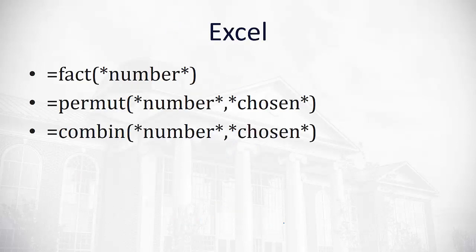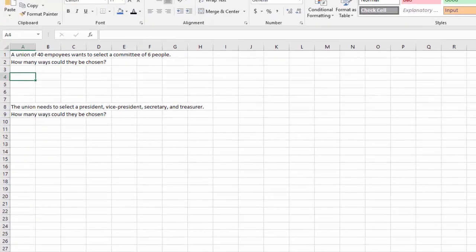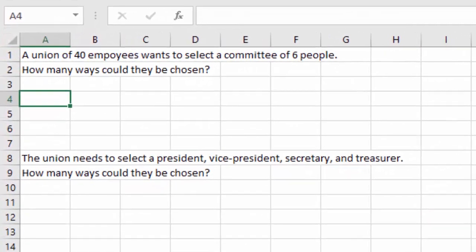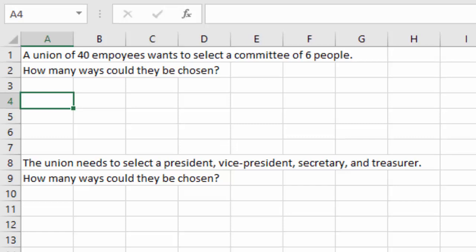Now to help us with larger numbers, we can do these on Excel. So let's take a look at those. There's an equals FACT for factorials, an equals PERMUT for permutations, an equals COMBIN for combinations. I've got two examples here. We've got a union of 40 employees that want to select a committee of 6 people. Here, the order that that union picks their committee does not matter. We're just picking 6 out of the 40. Since the order does not matter, we have a combination.